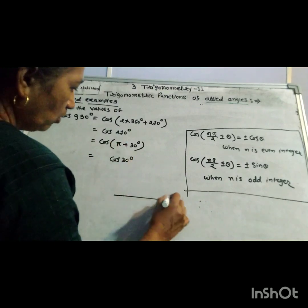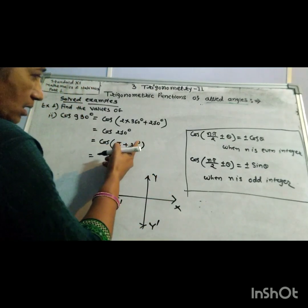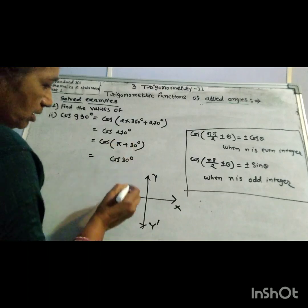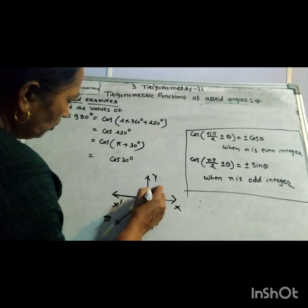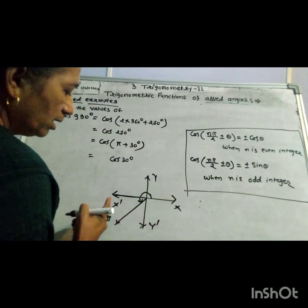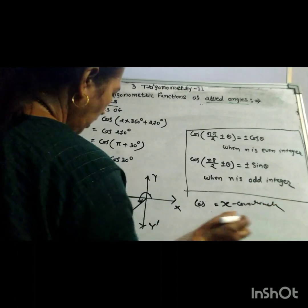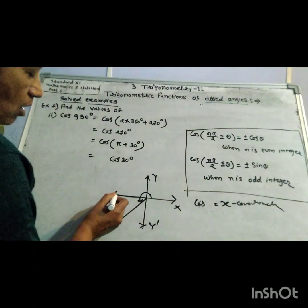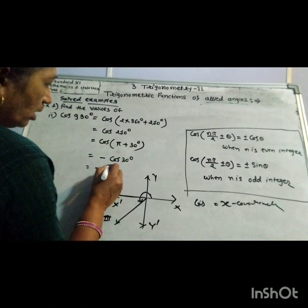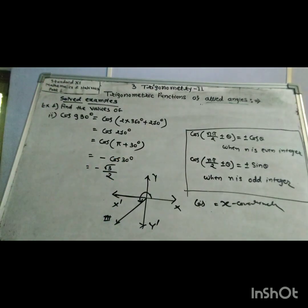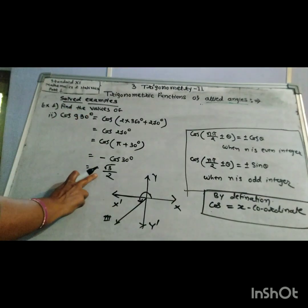Checking the quadrant: π + 30° means 180° + 30°, which places the angle in the third quadrant. By definition, cos(θ) is the x-coordinate, and in the third quadrant all x-values are negative, therefore cos(π + 30°) = −cos(30°). Since cos(30°) = √3/2, the answer for cos(930°) is −√3/2.